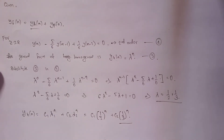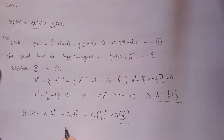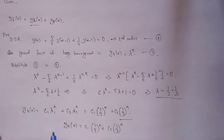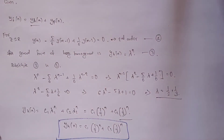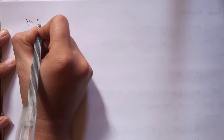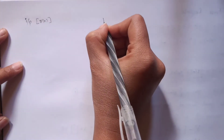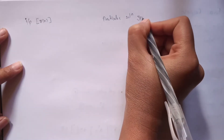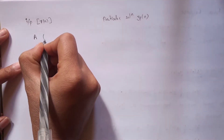We do not need to solve for c1 and c2 values right now. The homogeneous equation is y_h of n = c1*(1/2)^n + c2*(1/3)^n. Now we will calculate the particular solution. I will discuss a table — on the left-hand side we take the input x of n, and on the right-hand side the particular solution y_p of n.